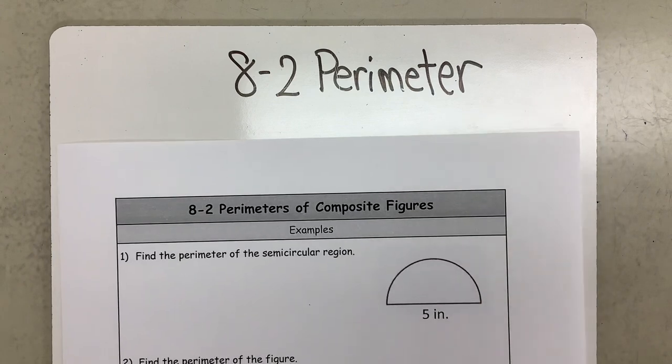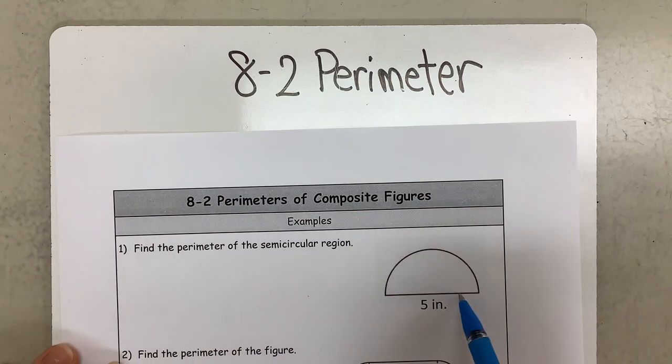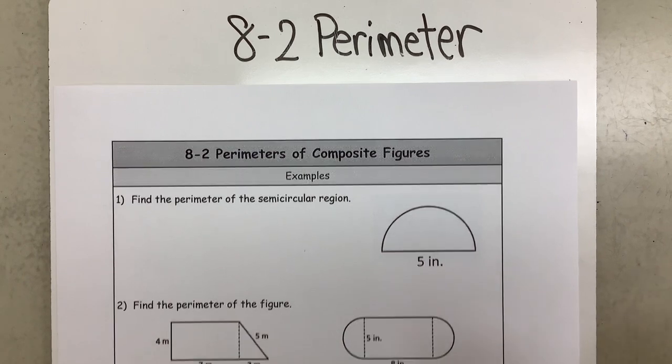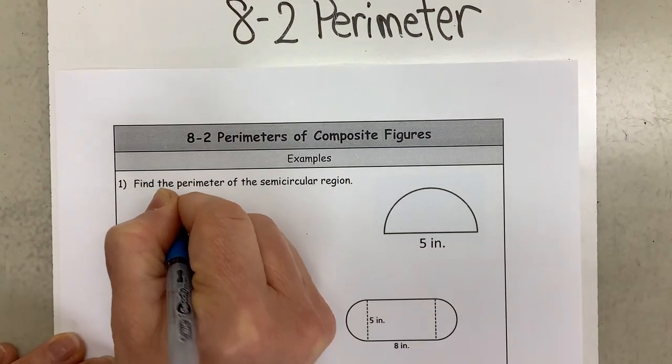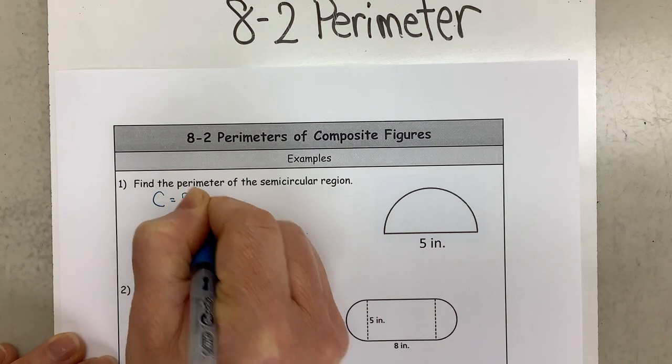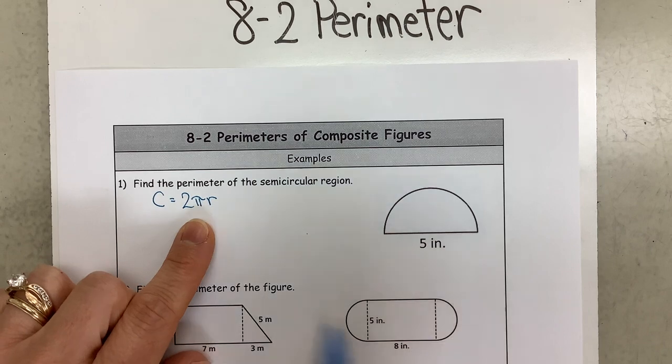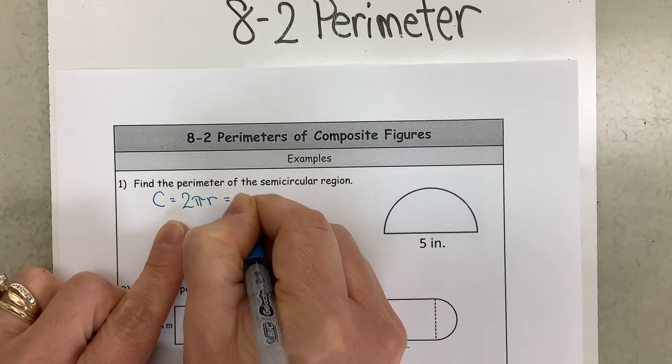Now we're going to come over here and we are going to find the perimeter of this semicircle. So we can first make a note that this is half of a circle. So normally our circumference equals 2πr. Okay, we've talked about the fact that two radiuses is actually one diameter.